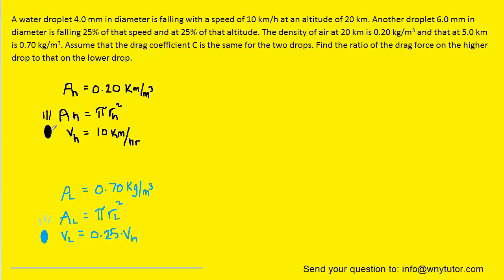What we have are the two raindrops that are falling towards the ground. The one colored in black is the drop that has an altitude of 20 kilometers, and then the blue one you can see has an altitude 25% of that, which is 5 kilometers.